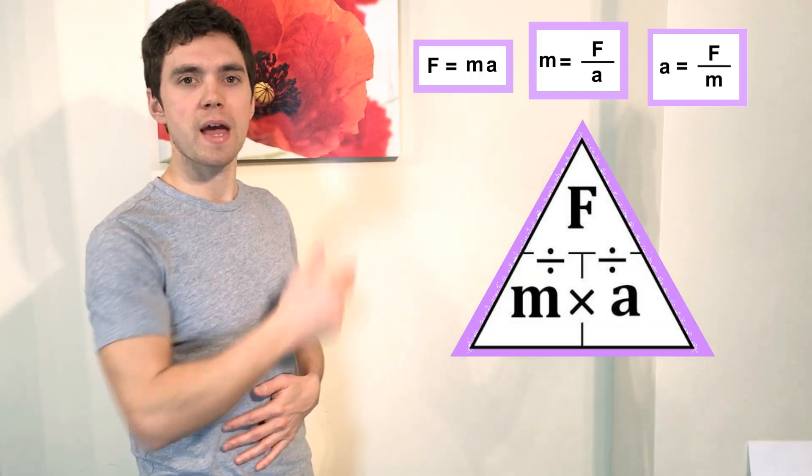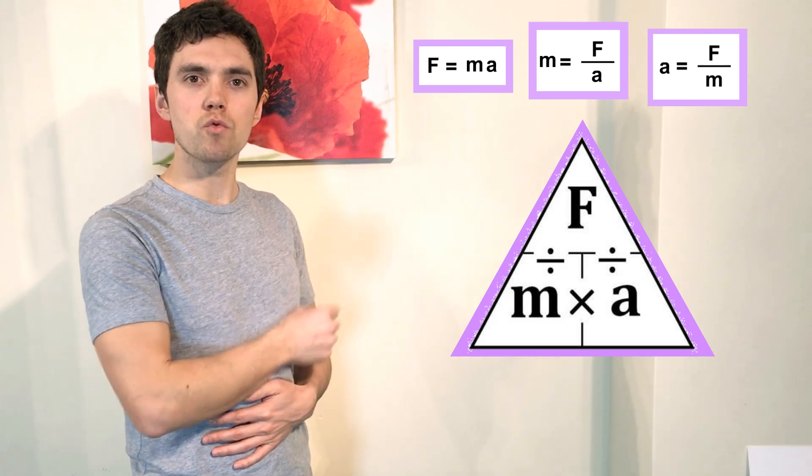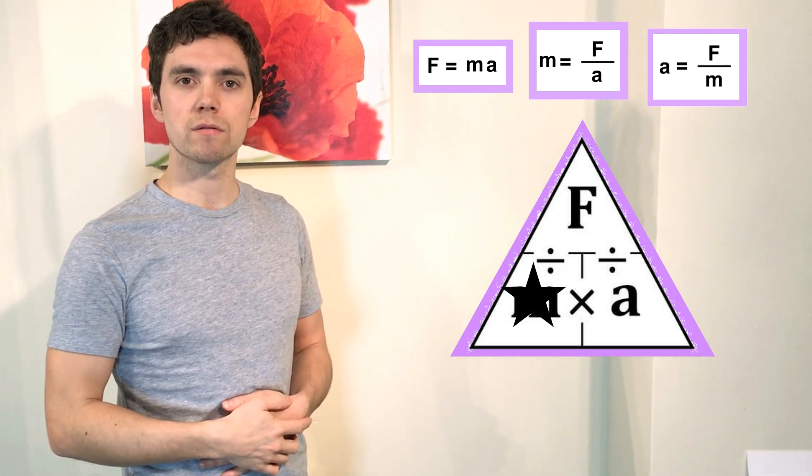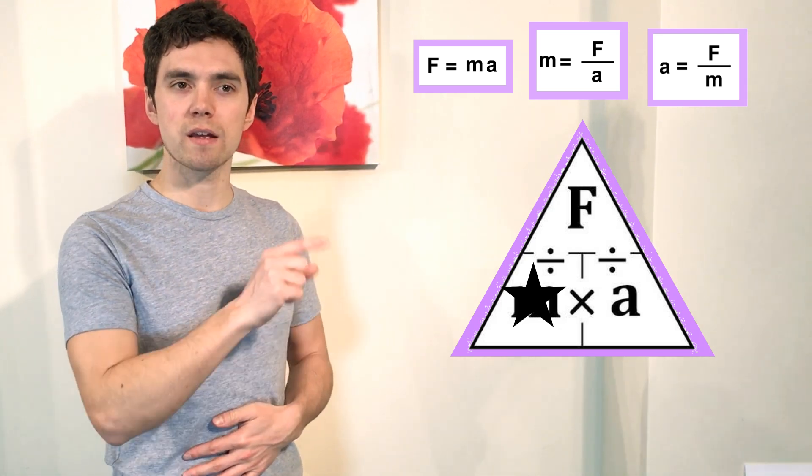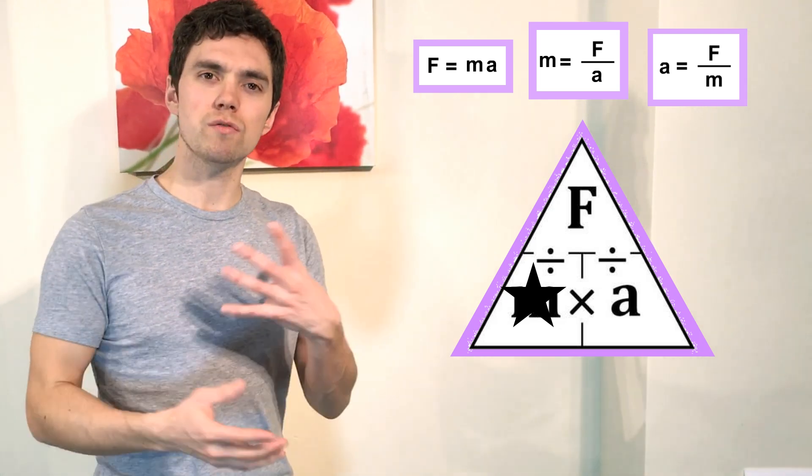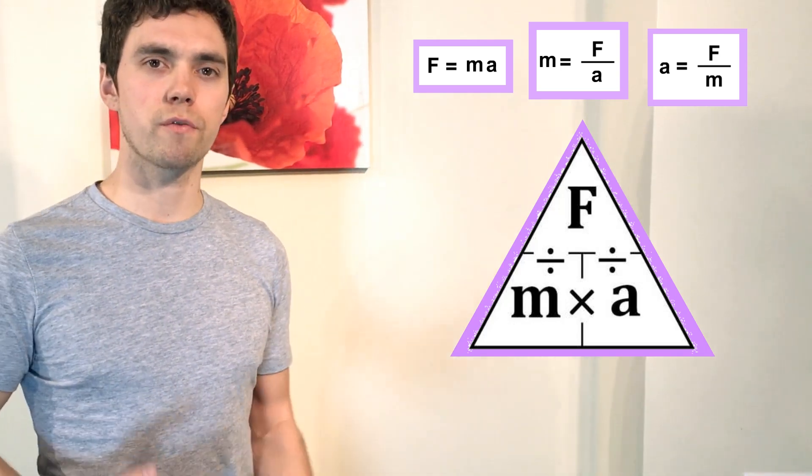So you can flip it around and say, yes, F equals MA, but M also equals F over A. We just divide both sides by A. You get F over A equals M. So you can use this equation whichever form you like.